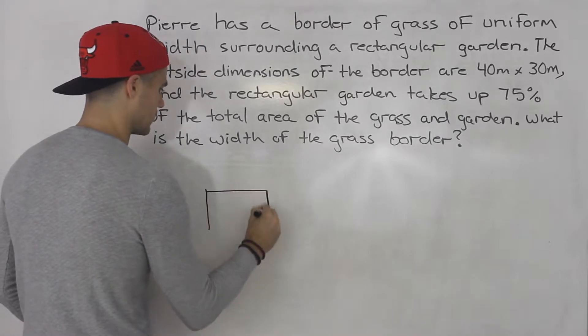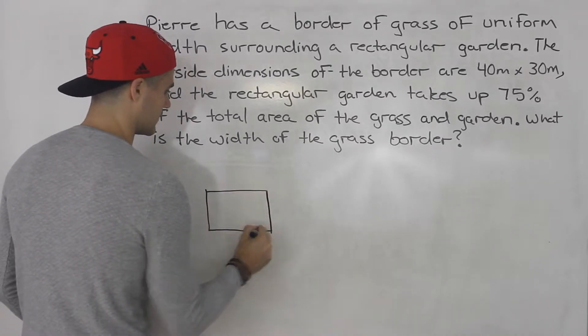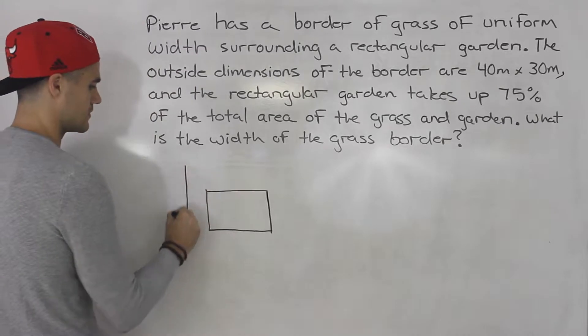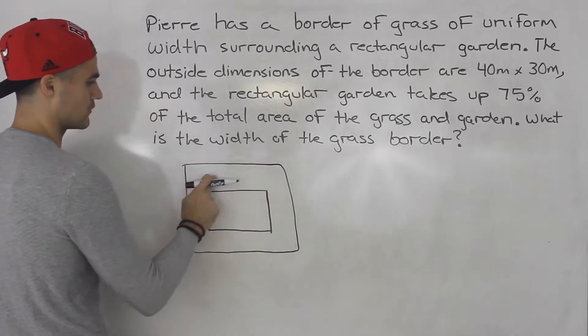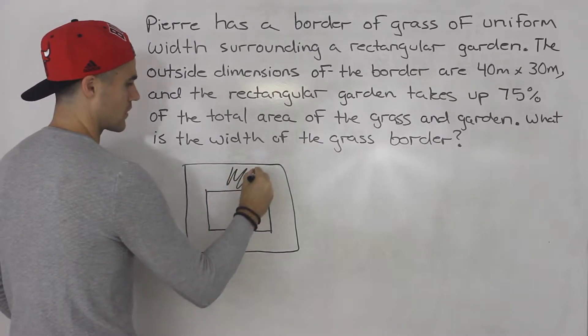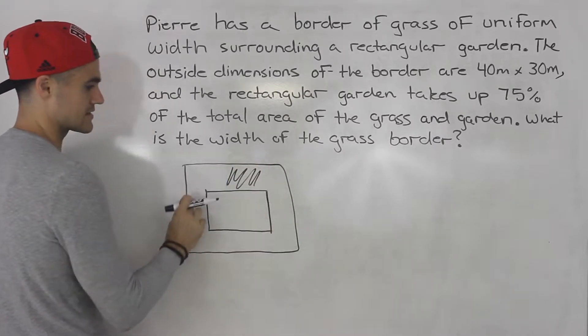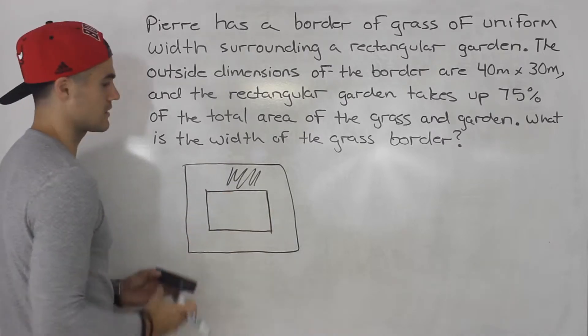We have a rectangular garden and then we have grass surrounding the rectangular garden of uniform width. So this portion right here all around is the grass surrounding the garden.